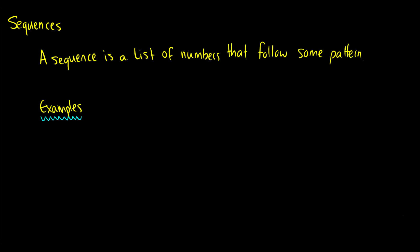A sequence is a list of numbers that follow some sort of pattern. An example would be 1, 2, 3, 4, all the way up to infinity — it goes up by 1, so you see a plus 1 pattern from term to term. Or you might have something like 1, 2, 4, 8, 16, where each term doubles the previous term.